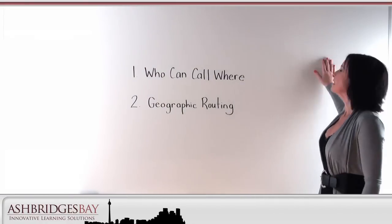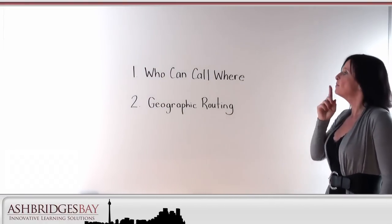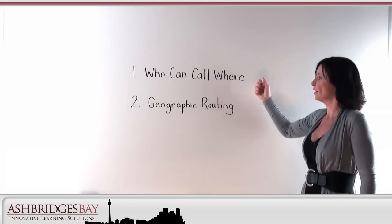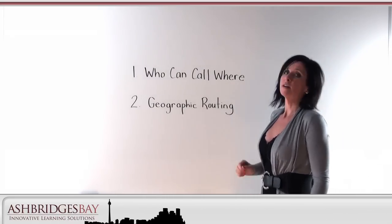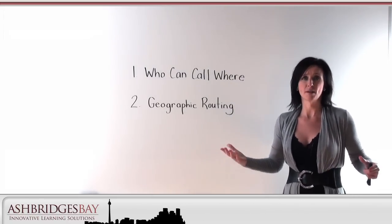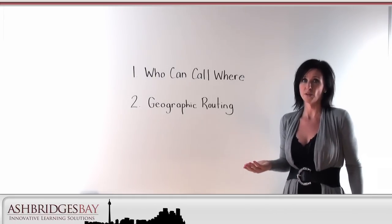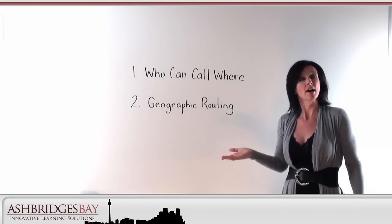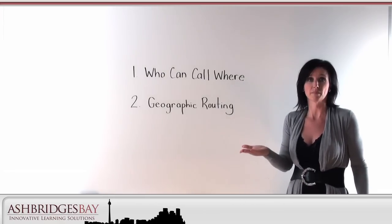The third thing we're going to talk about is class of control. In class of control, two of the most important things are controlling who can call where and controlling the geographic routing. For who can call where, we want all the phones in our company to be able to access the numbers they need to dial, but we might want to restrict some phones too. For example, in the break room, we may have a phone there and we don't want it to be able to dial long distance or international numbers.